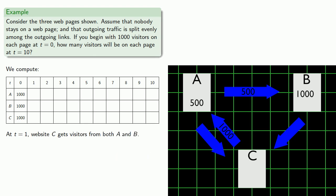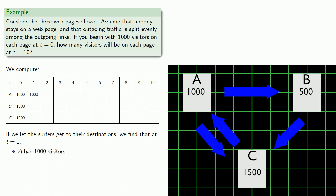And at t = 1, website C gets visitors from both A and B. It gets the other half of the traffic from A, that's these 500 visitors. And since the only outgoing link from B goes to C, then C also gets all 1,000 visitors currently on B. So now if we let these surfers actually get to their destination, we find A has 1,000 visitors, B has 500, and C has 1,500.